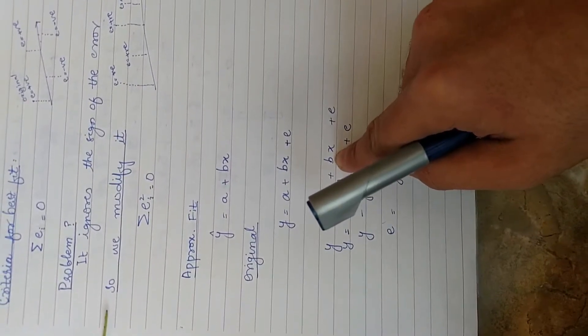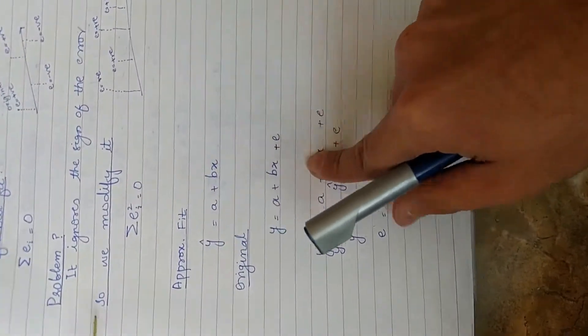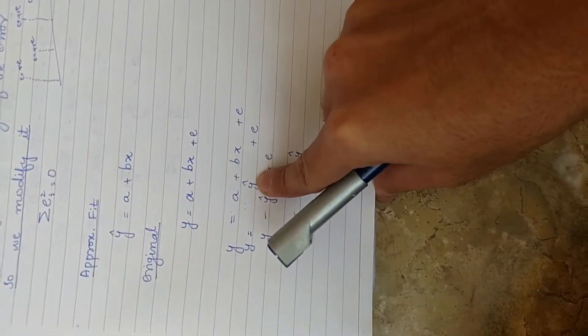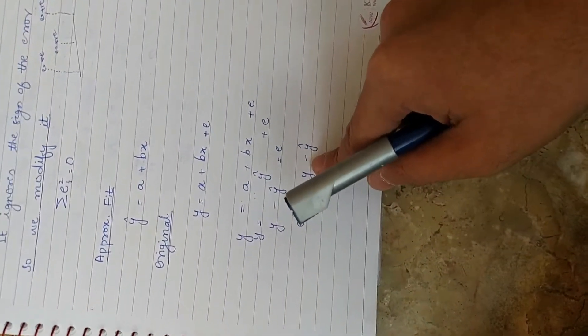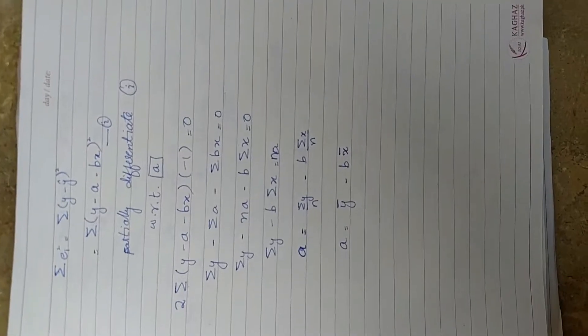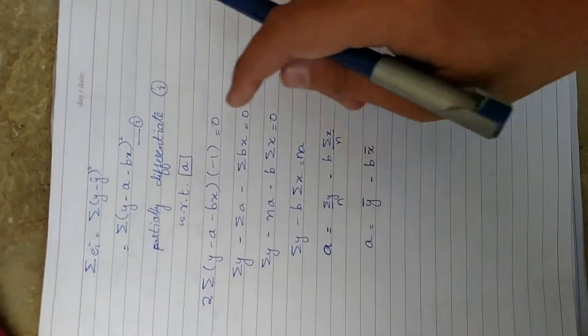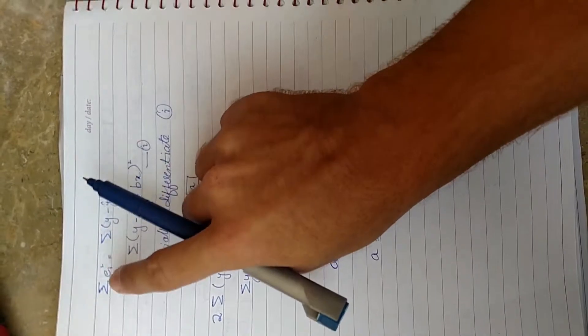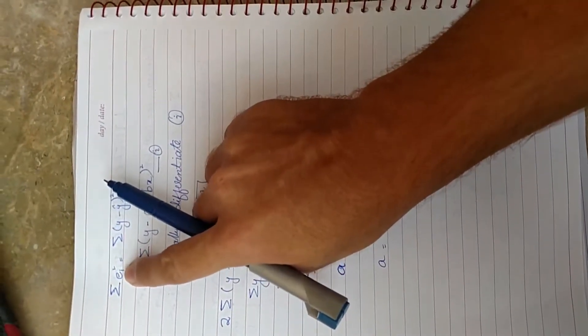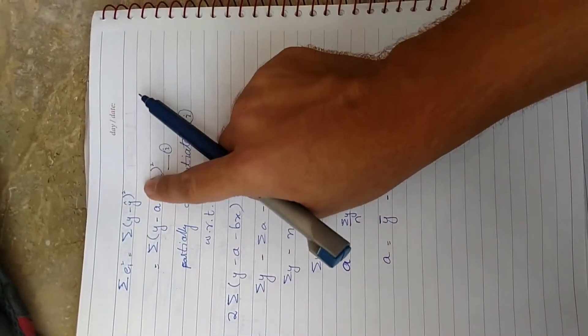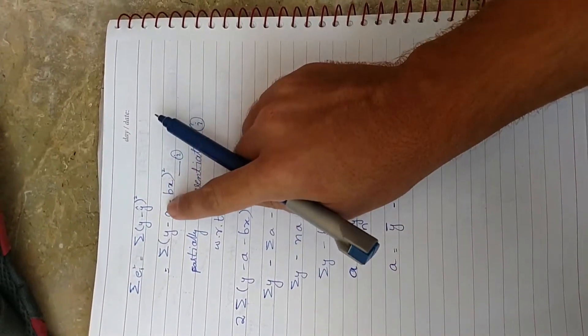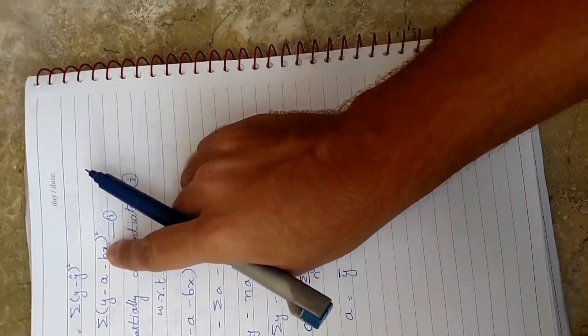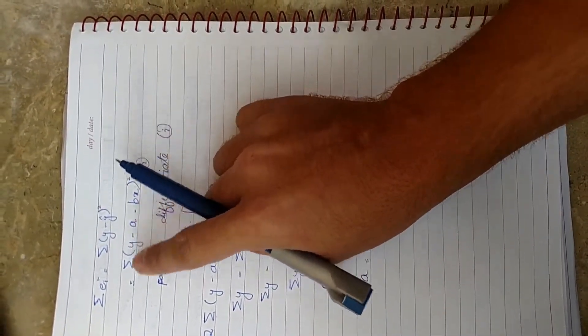Previously we found a formula for error. Now we substitute this formula: e equals y minus y cap. y minus y cap, y cap equals a plus bx. This is equation number one for us. Now for the formula of a, we are going to partially differentiate equation number one with respect to a.